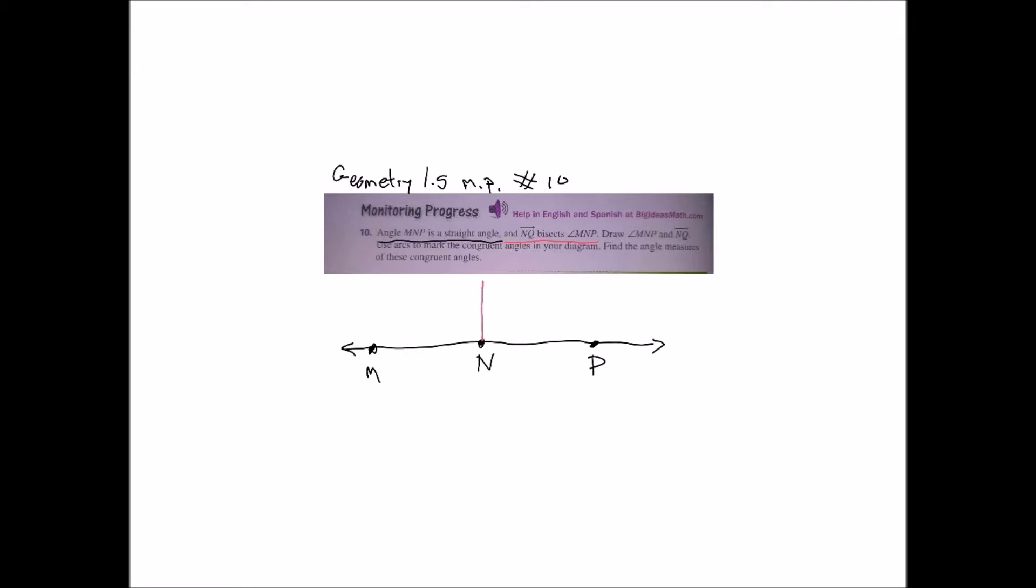Then it has a ray that bisects it at point N, which is right in the middle. We're just going to draw that out. Bisect means that it cuts it in half, so it's a 180-degree angle cut in half.